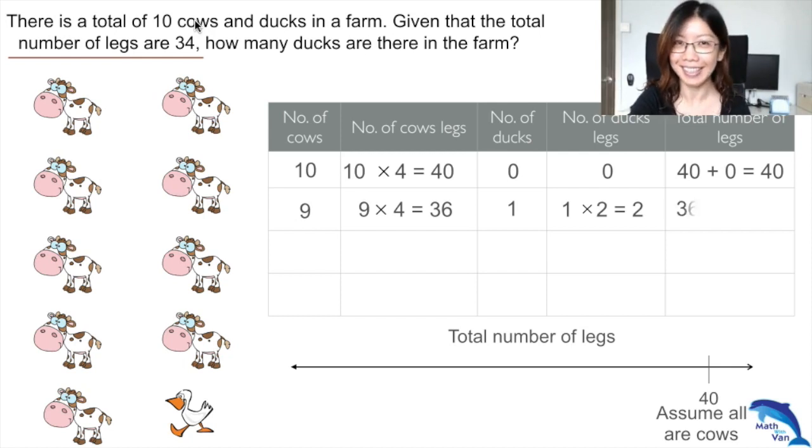That will contribute 2 legs, giving a total of 36 plus 2, which is 38. What have we observed here? When we replace a cow with a duck, the total number of legs drops by 2.